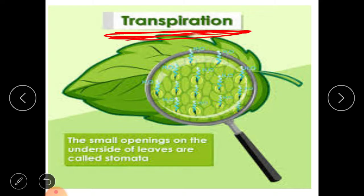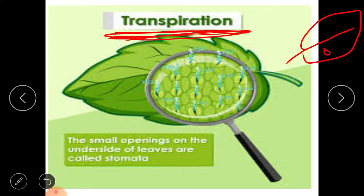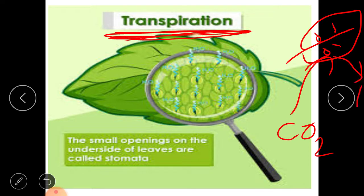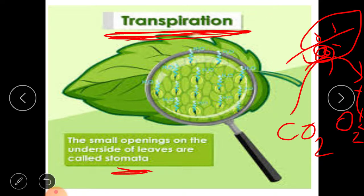Transpiration relates to the small pores on the leaves of plants. In chapter one we discussed that leaves have small holes for breathing — from where carbon dioxide goes inside and oxygen comes out. These small pores or holes are known as stomata.